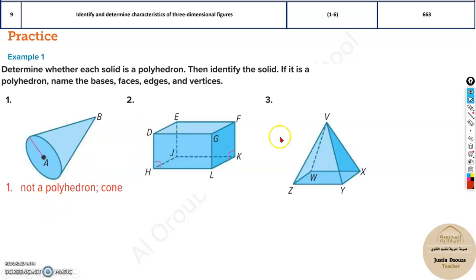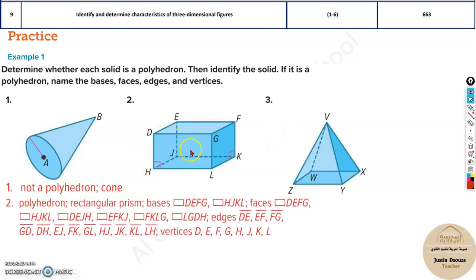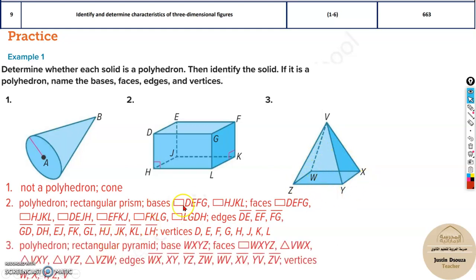Now over here, the second and third, this is a polyhedron, it's a rectangular prism and this is a rectangular pyramid. Now, how do we know what is faces and what is bases? This is important and the vertices are very easy. I'll just tell you the vertices first.